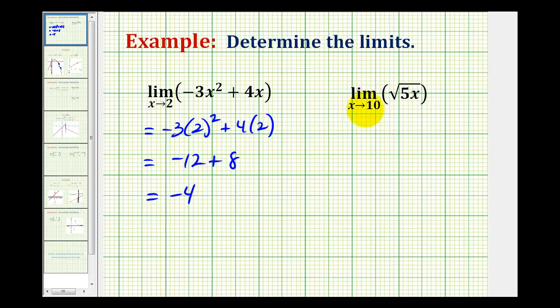Next, we have the limit as x approaches 10 of the square root of 5x. Again, if you can visualize a square root function in your mind, the easier it is to recognize that this function is a continuous function over its domain. So as we approach positive 10, we'll be approaching the point on the function where x equals 10, so we can evaluate this limit by performing substitution.